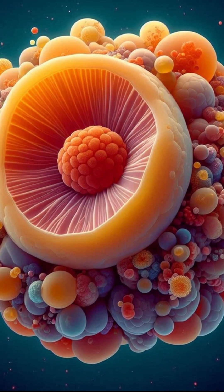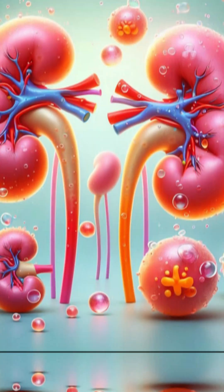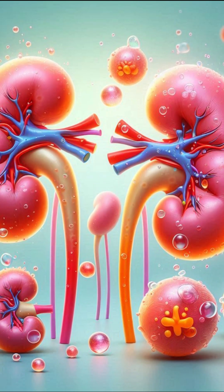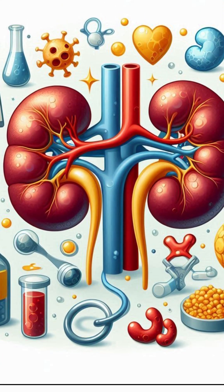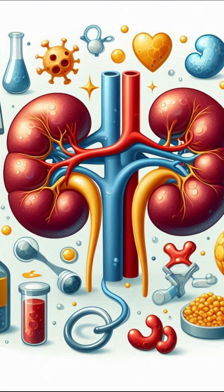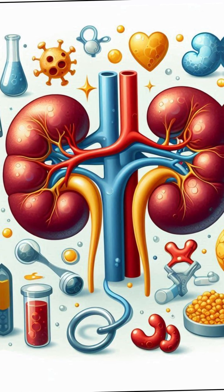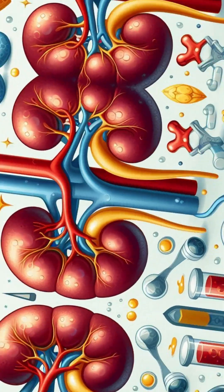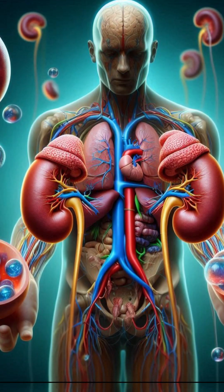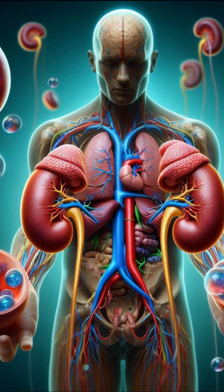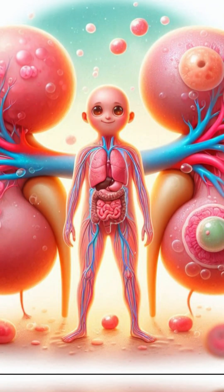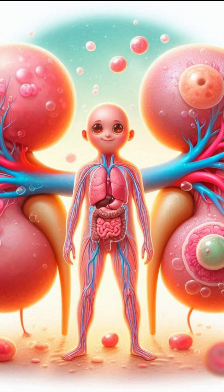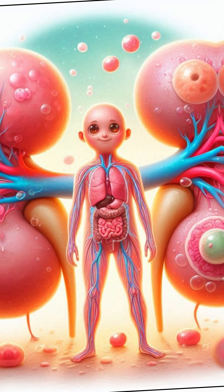Number four: cystine stones. These are rare and usually run in families. They're caused by a genetic disorder called cystinuria, where the kidneys leak an amino acid called cysteine into the urine. When too much cysteine builds up, it forms crystals, and then stones. These can start forming early in life and often come back.